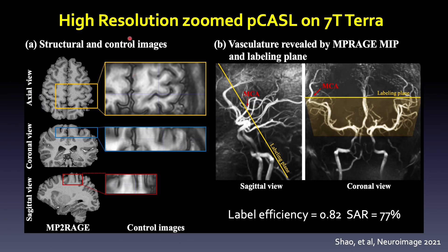We can also use a zoomed GRACE PASL technique to excite only a small region — for example, in this case the motor cortex — enabling very high resolution, down to one millimeter, for laminar perfusion analysis. For this study, we can also optimize the labeling plane to be above the circle of Willis, simultaneously labeling the ACA, MCA, and PCA to take advantage of the sweet spot of the B1 field. We can achieve labeling efficiency above 80% while SAR is even reduced to 77%.